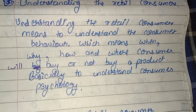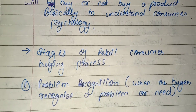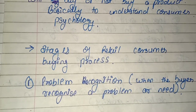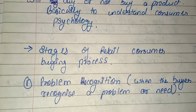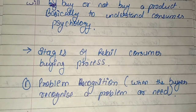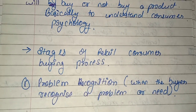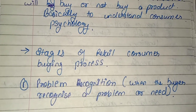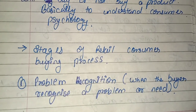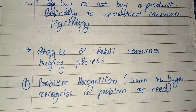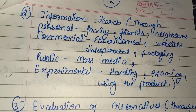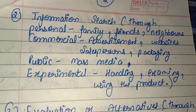Now there are some stages of the retail consumer buying process. The first one is problem recognition. Problem recognition is when the buyer recognizes a problem or need — that is, we recognize that a need exists. This need should be identified before any purchase decision is made.